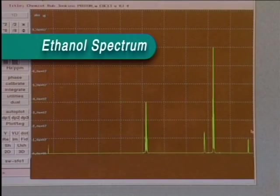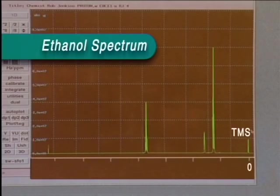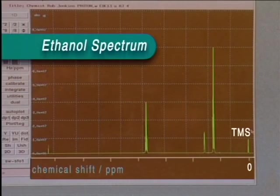Here is the spectrum of ethanol. The peak to the far right is that from the TMS reference. By definition, this is at zero parts per million, ppm. The distance leftwards along the horizontal axis is called the chemical shift and it is measured relative to the peak that is obtained from the hydrogen atoms in TMS.